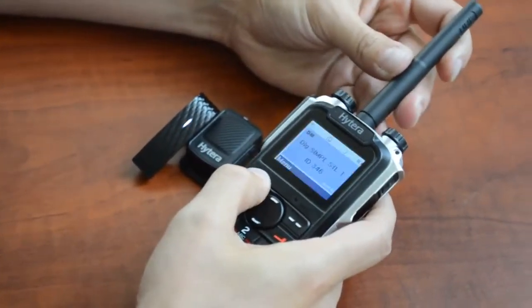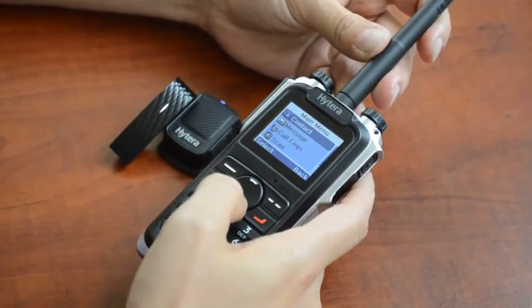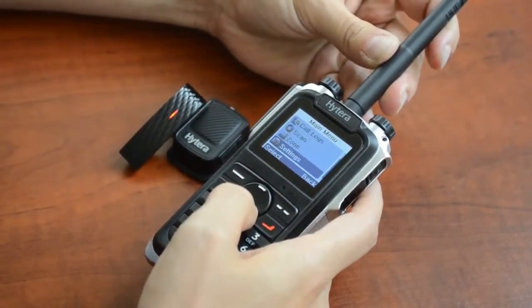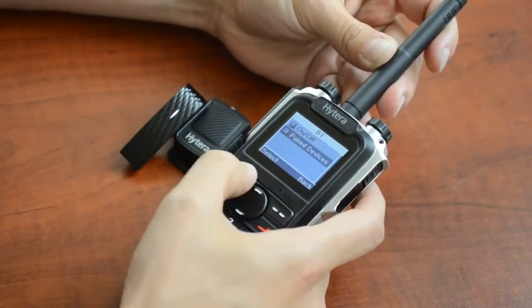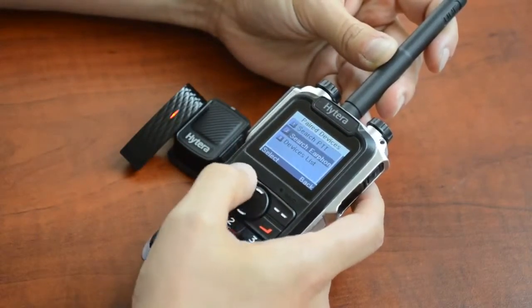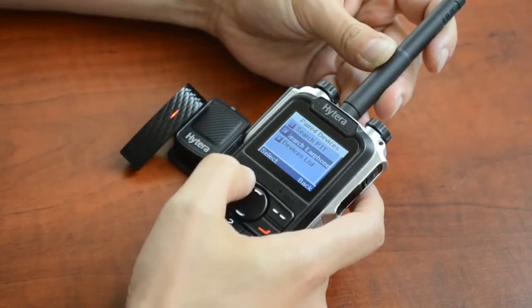You then go to the same process, going through menu, going down to accessories, going to BT for Bluetooth and you go to paired devices. This time you go to search earphone or earpiece.